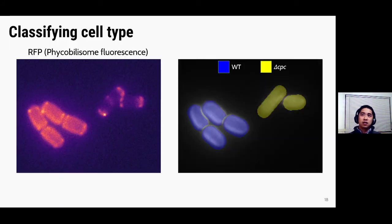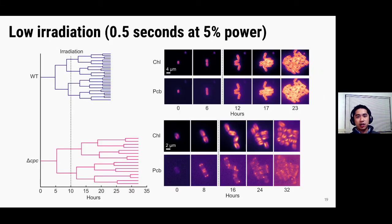So to analyze the cells, I wrote some code to identify the wild-type and delta CPC cells based on the phycobilisome fluorescence. And once we do that, I can basically bin the data into two different groups. And these are two representative plots of two different colonies that we can see. So this top plot here shows a lineage tree for a wild-type colony, and you can see that this dotted line here indicates the irradiation event. And you can see that the cells continue to grow, and they don't seem to be perturbed by the irradiation at all, they just continue to divide. And the same thing happens here for the delta CPC cells as well.